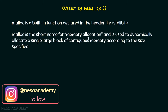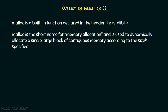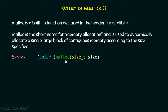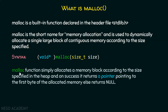Malloc is the short name for memory allocation and is used to dynamically allocate a single large block of contiguous memory according to the size specified. The syntax of malloc is clear that malloc requires a size and it will return a pointer — basically a void pointer. Malloc function simply allocates a memory block according to the size specified.